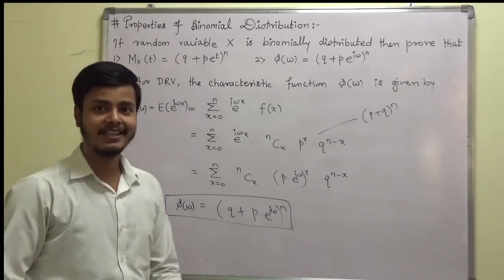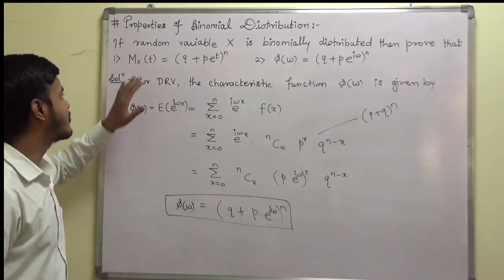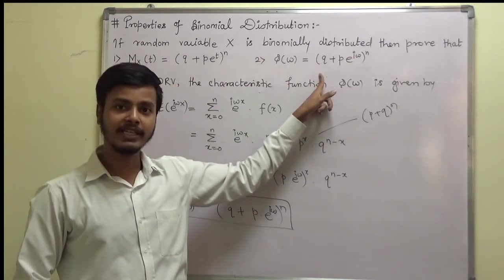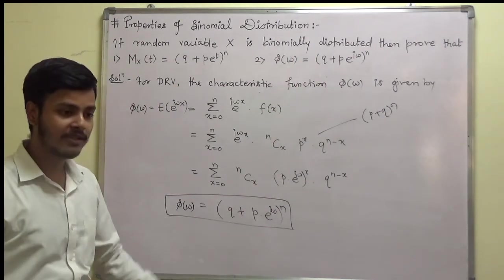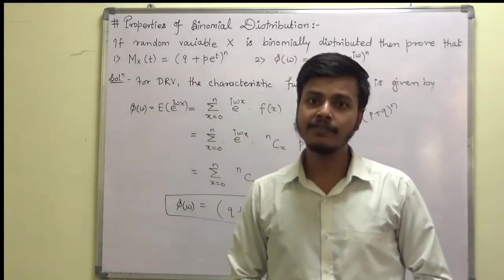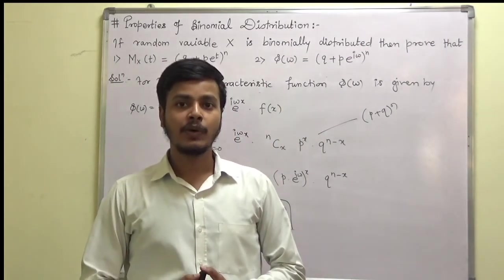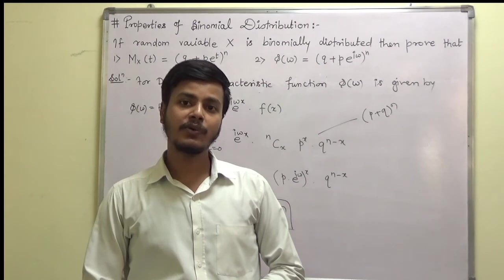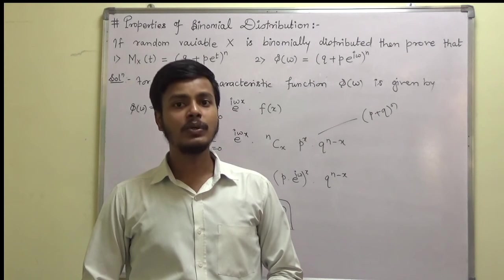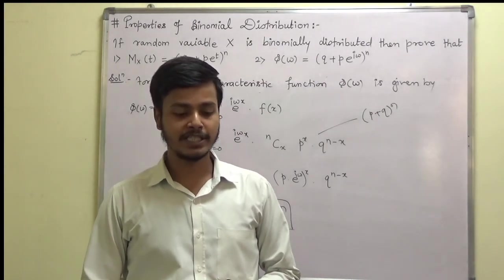This is just like in a festive season we have the offer — buy one get one. You just have to prove the property for the moment generating function and this second property is a bonus. I hope this is clear to you — very simple properties. In the very next video lectures we are going to take problems on Bernoulli's distribution. Keep watching and keep learning. Thank you for watching this learning video.